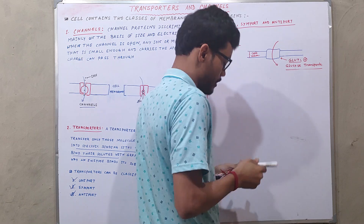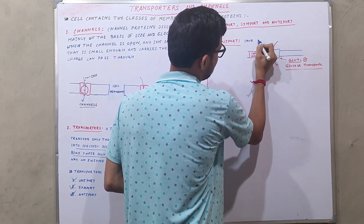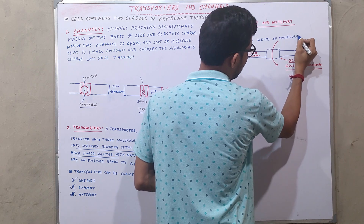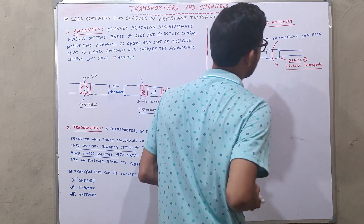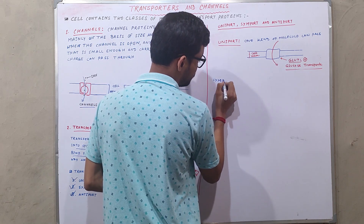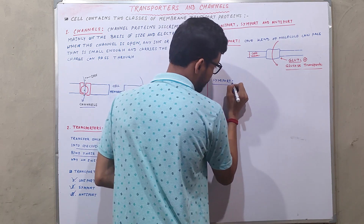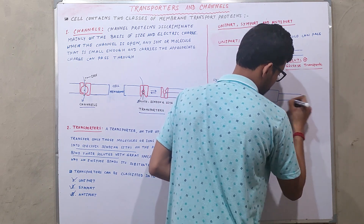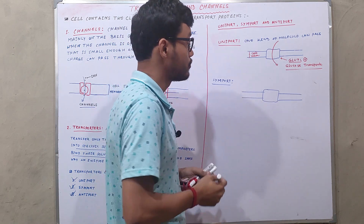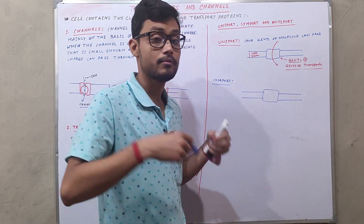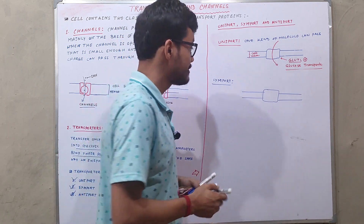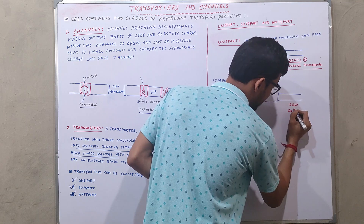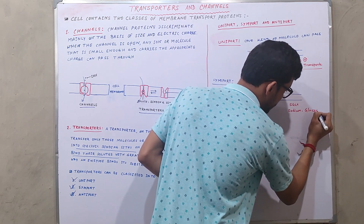So in the case of uniport, only one kind of molecule can pass. Next is symport. In this type of transporter, two different molecules can pass from the outside of the cell to the inside of the cell or vice versa. A good example is SGLT — sodium-glucose transporters.